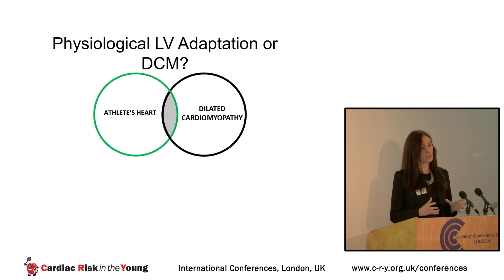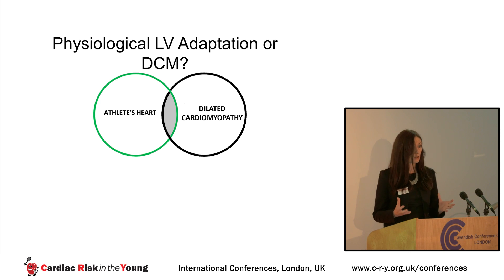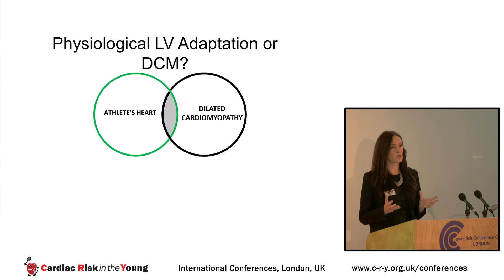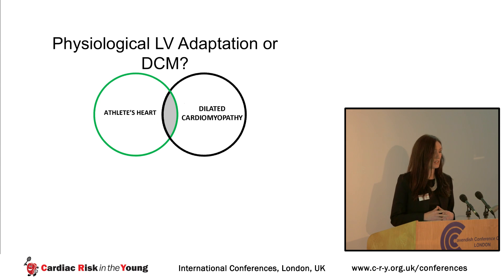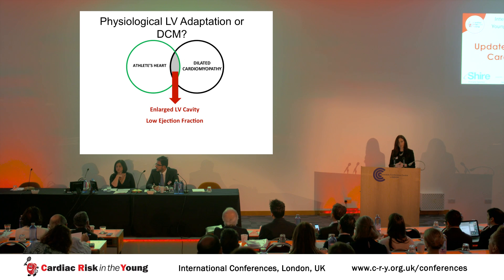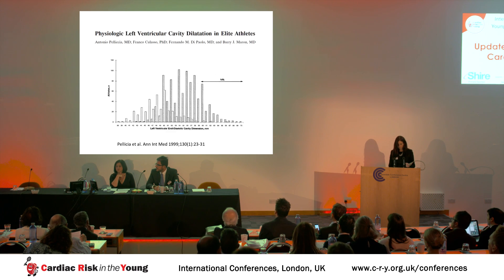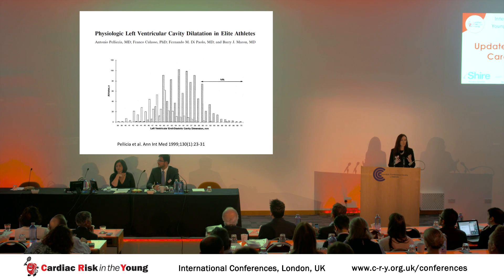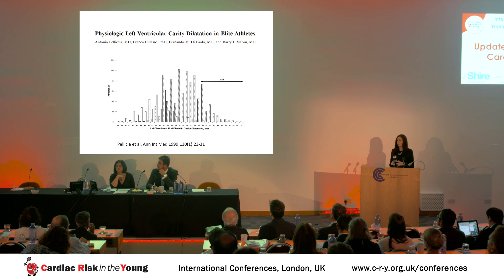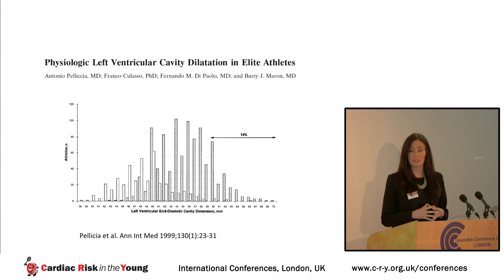Therein lies the issue: when we see physiological adaptation, we can be confused as to whether this could be an underlying dilated cardiomyopathy in those individuals with left ventricular dilatation and a borderline low ejection fraction. A lot of the work has been done — the study by Antonia Pelliccia and Barry Marin looking at over 1,000 Olympic athletes found that 14% of them had left ventricular dimensions that would be in the realms of possible dilated cardiomyopathy.